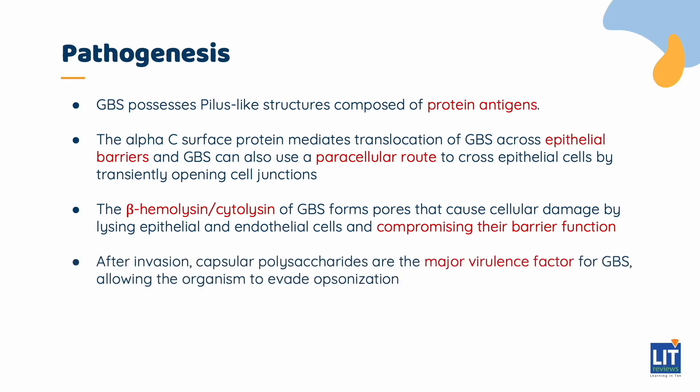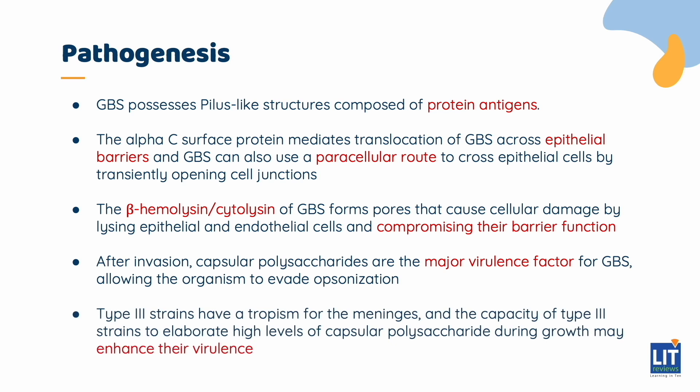After invasion, capsular polysaccharides are the major virulence factor for GBS, allowing the organism to evade opsonization. Type 3 strains have a tropism for the meninges, and the capacity of Type 3 strains to elaborate high levels of capsular polysaccharide during growth may enhance their virulence. As we will see later, this is an important strain in GBS infection in infants.